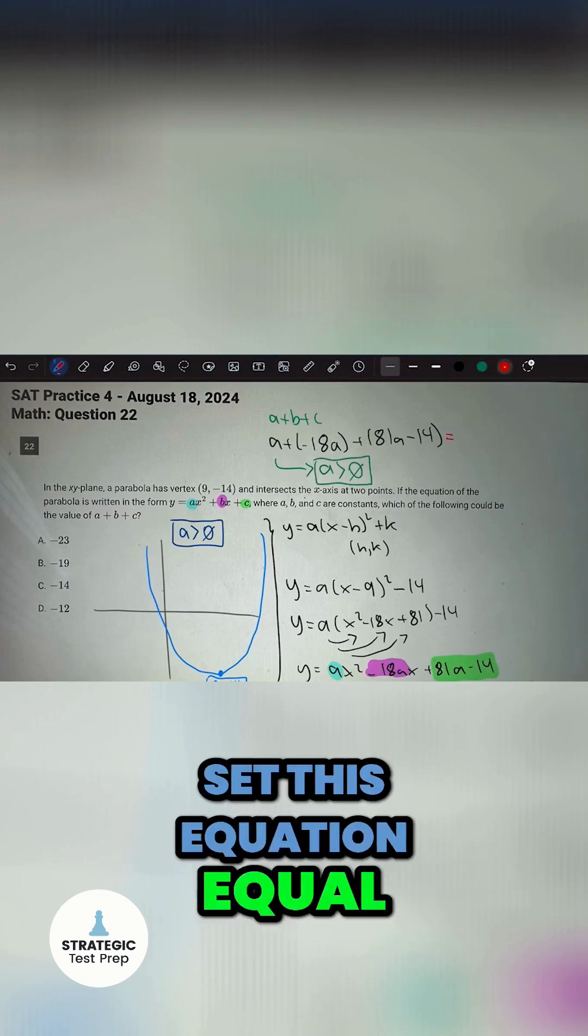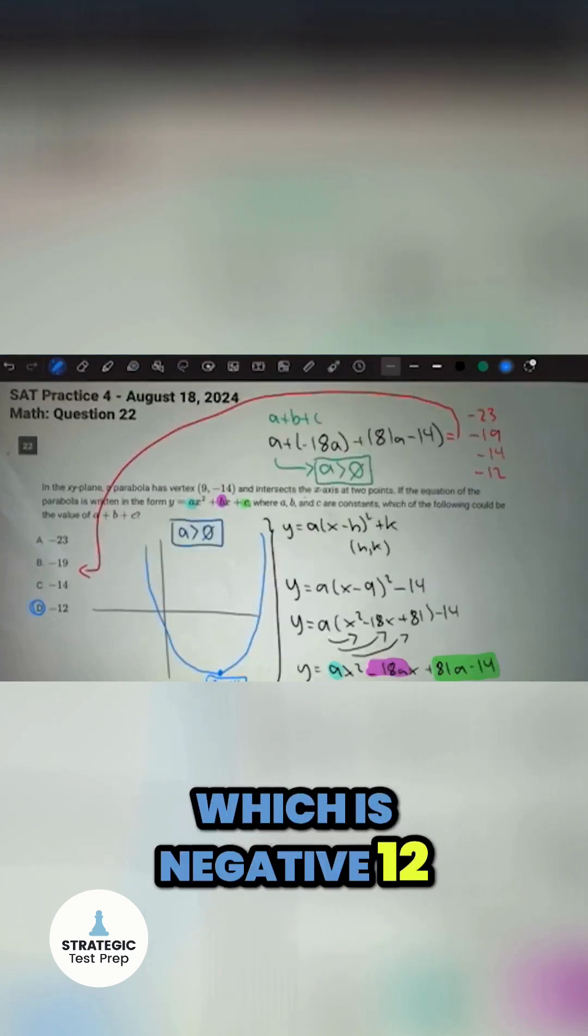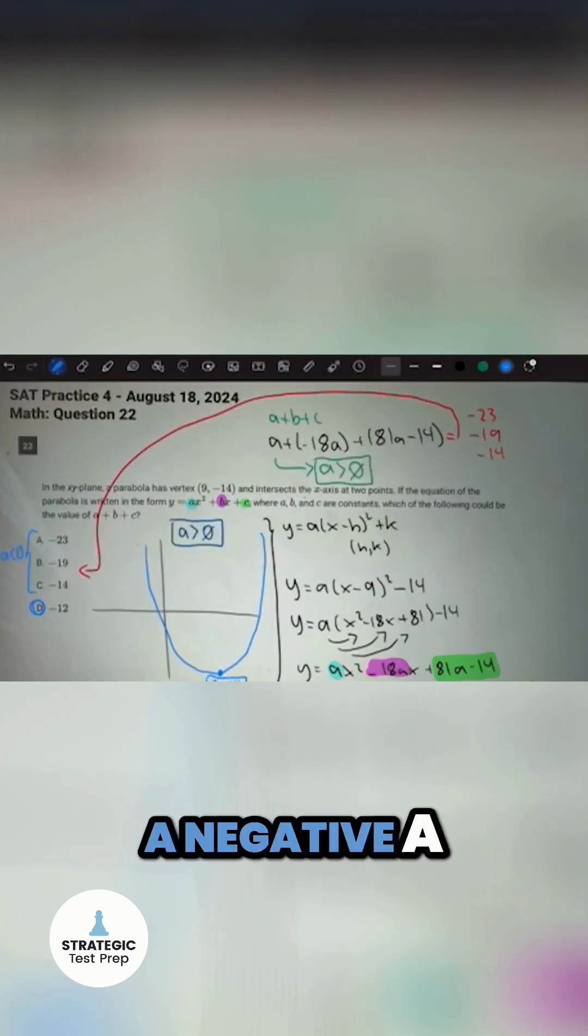we were to set this equation equal to any of the answer choices, the answer is actually option D, which is -12, because the rest of the options give us a negative a.